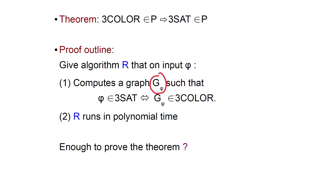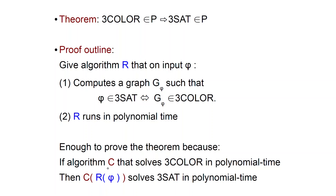Why is this enough to prove the theorem? It is enough because if some algorithm C exists that solves 3Color in polynomial time, then this new algorithm C(R(φ)) will solve 3SAT in polynomial time. You get your input formula φ, you feed it to R which creates a graph G, and you feed this graph to C. Because the graph is 3-Colorable if and only if the formula is satisfiable, this algorithm is correct.